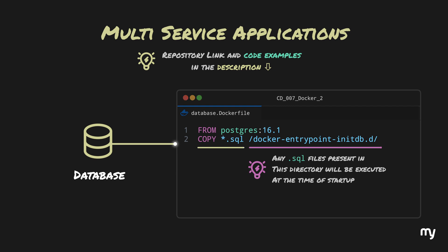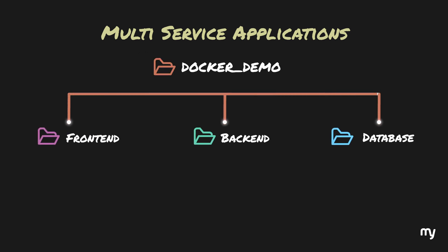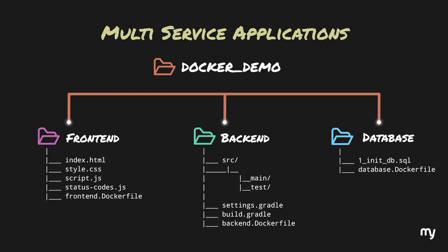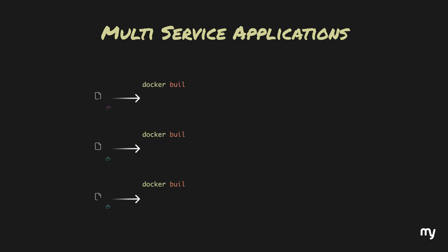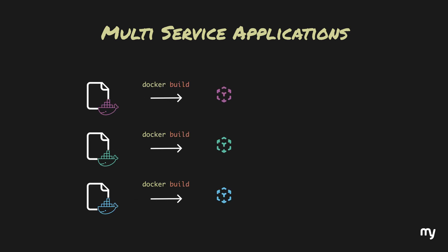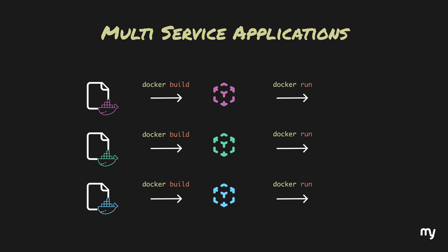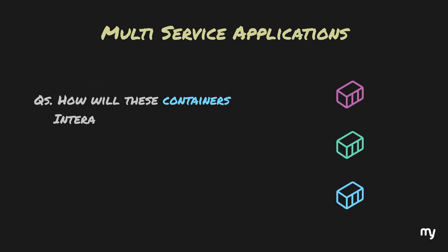We now have three directories, each containing the code for that application along with its Dockerfile. We can run docker build to build three images and docker run to start them as containers. But the question is: how will these containers interact with each other?